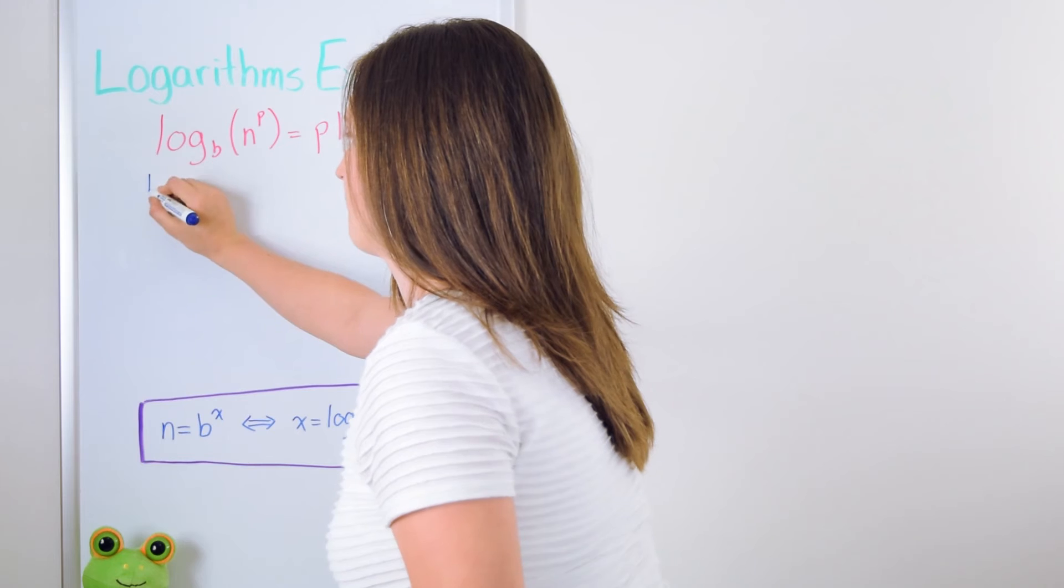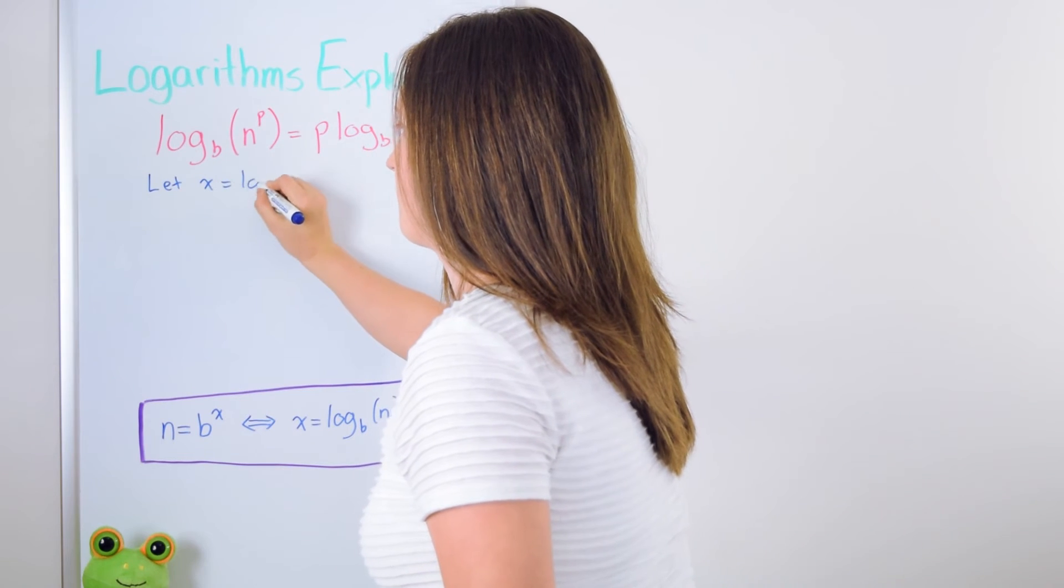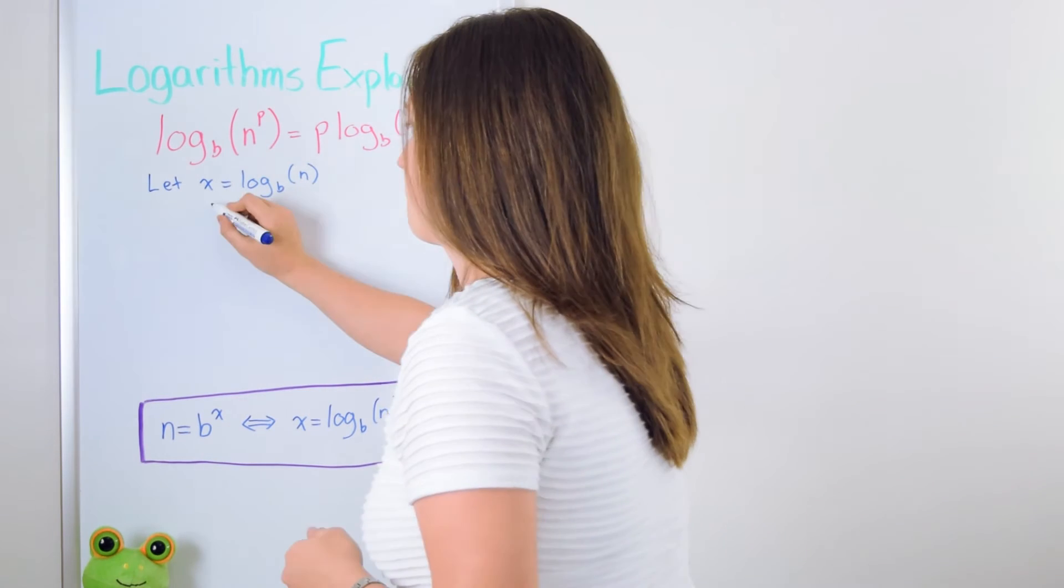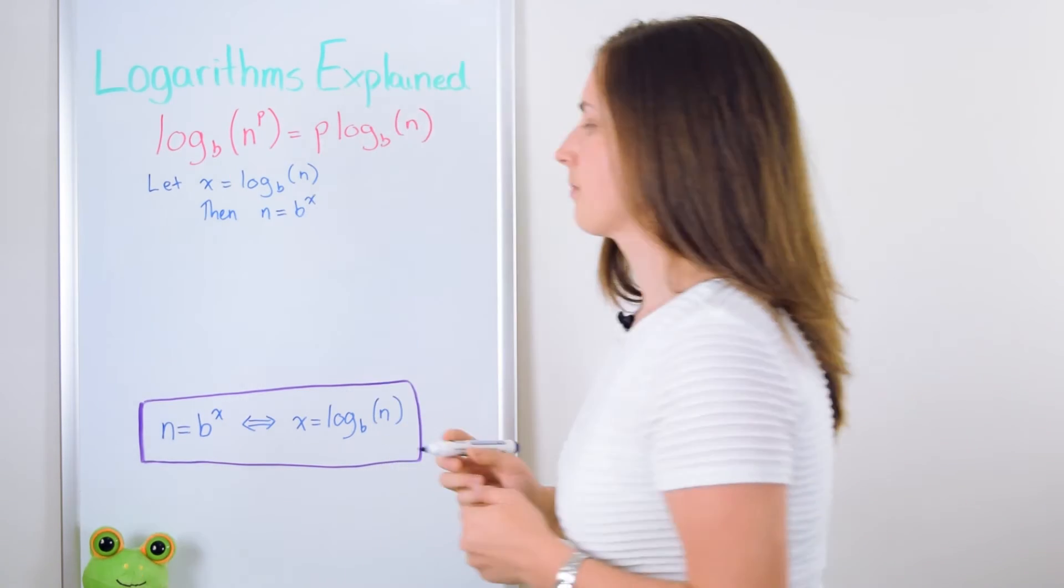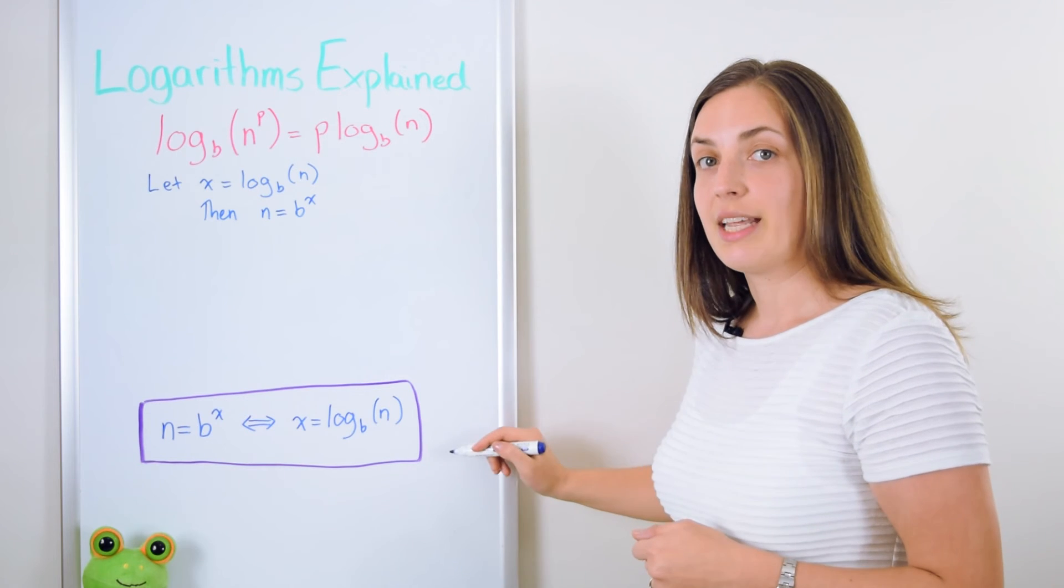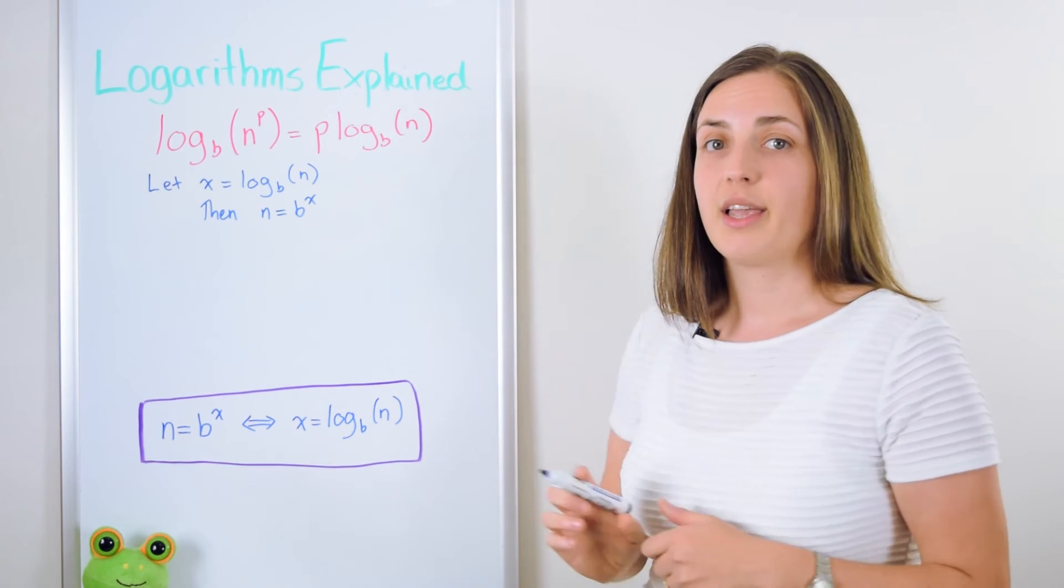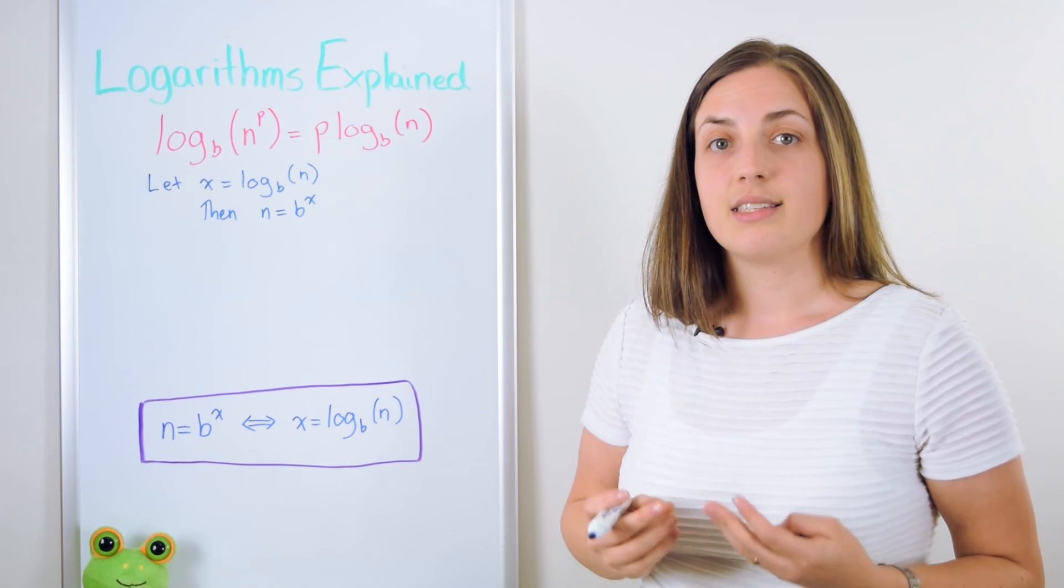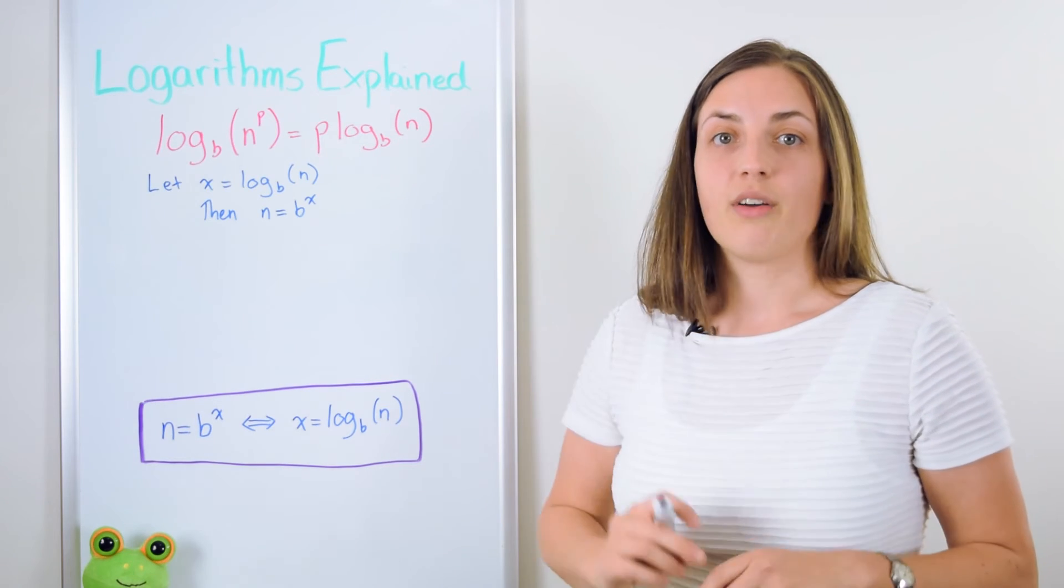Let's start by letting x equal log base b of n. We know by the definition in the purple box that that's the same exact thing as saying that n is equal to b to the power of x.